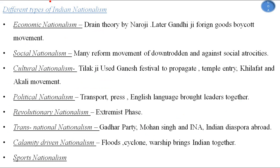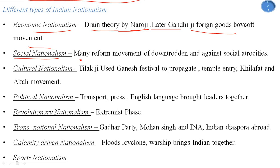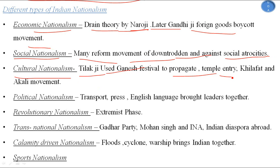There are different types of nationalism. Economic nationalism is represented by Dadabhai Naoroji's Drain of Wealth theory, and Gandhiji's foreign goods boycott movement. Social nationalism includes reform movements against social atrocities targeting the downtrodden, like Raja Ram Mohan Roy's movements. Cultural nationalism: Tilak used the Ganesh festival to propagate nationalism; temple entry, Khilafat, and Akali movements are examples of cultural nationalism.